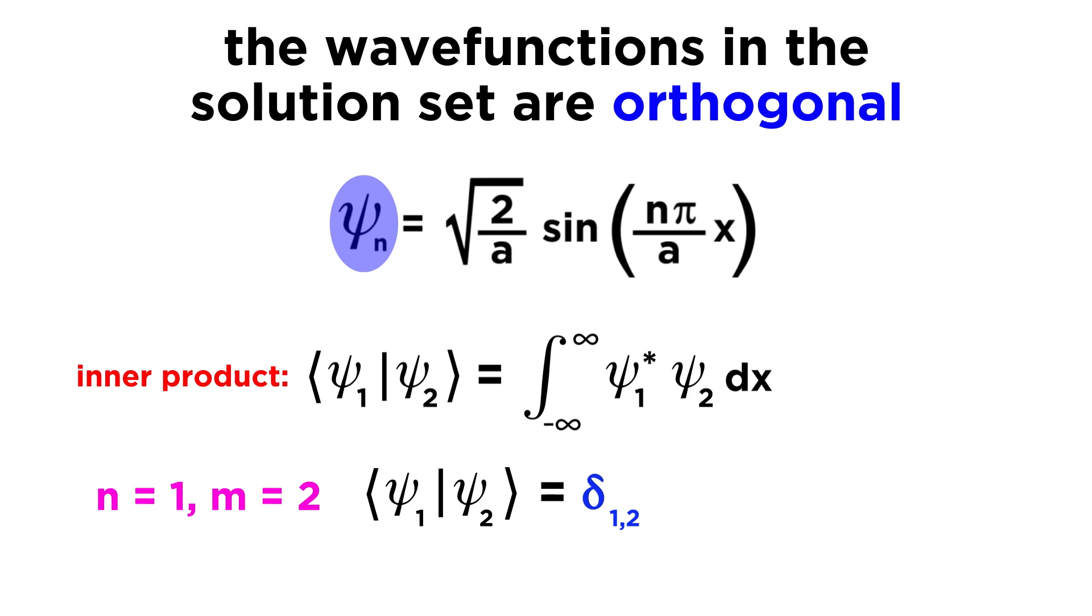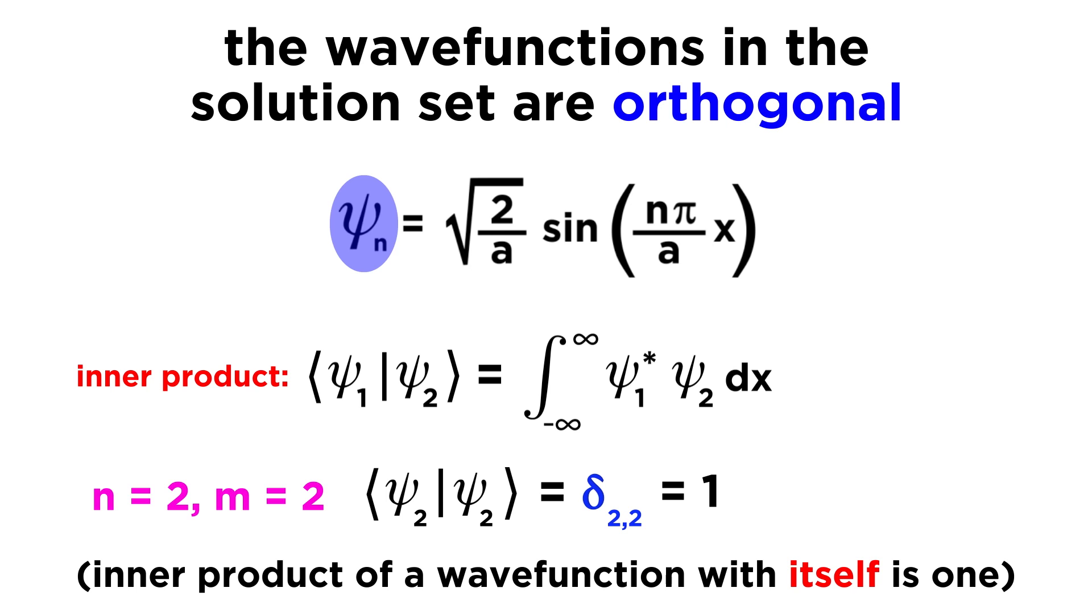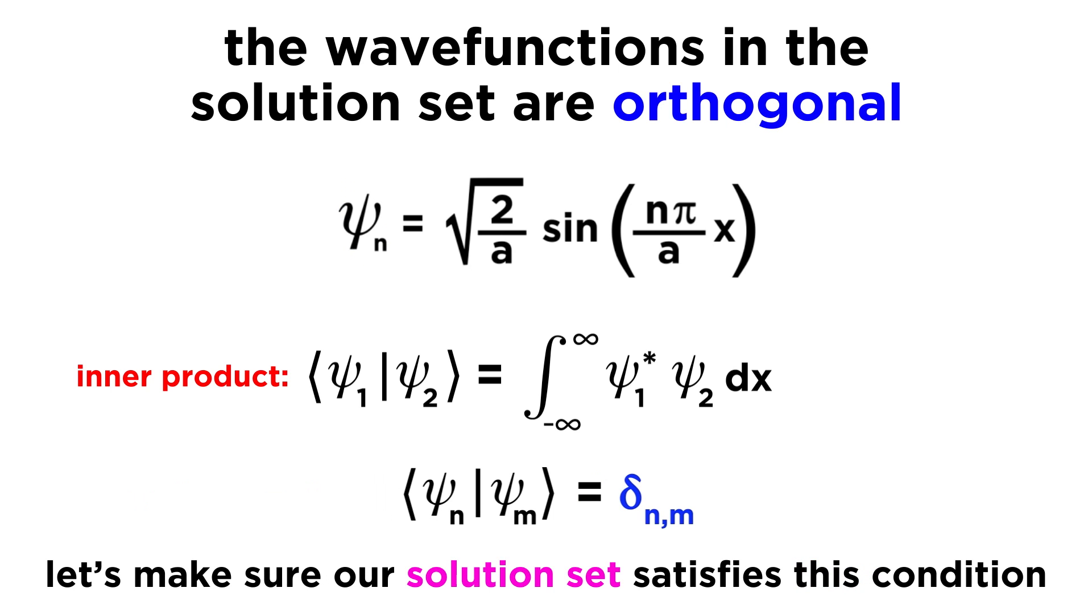So referring back to our solution set, each value of n defines a solution to the equation given by a different wavefunction psi and corresponding with a different eigenenergy. Each wavefunction in the solution set is linearly independent with respect to the others, and as we recall, this can be expressed mathematically as follows, with the inner product of psi sub n and psi sub m being equal to the Kronecker delta, which equals 1 whenever n equals m, and equals 0 whenever n and m are not equal.